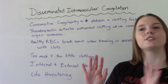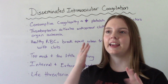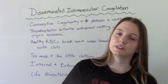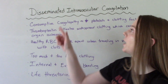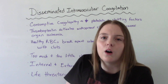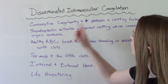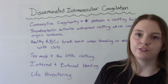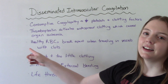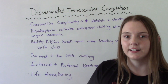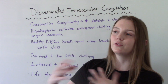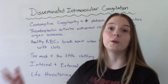Two things are happening at the same time in DIC and they are kind of opposites. Sometimes in your textbook you might see this referred to as consumption coagulopathy — meaning it's consuming and breaking down the things that can cause clots. So there is a decrease in platelets and other clotting factors. At the same time, thromboplastin is activating widespread clotting, which can lead to organ ischemia — lack of oxygen and red blood cells to our organs, which can lead to organ damage.